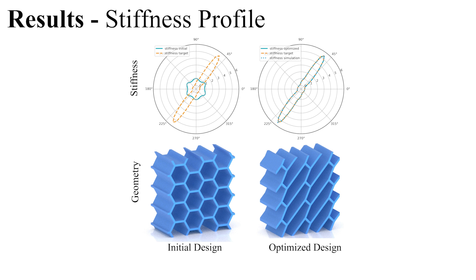Instead of prescribing a particular strain-stress behavior in a given direction, we can also specify directional stiffness profiles. Here we show an example of matching a target stiffness profile. As can be seen from the resulting structure, the beams change their orientation to match the prescribed highly anisotropic target.